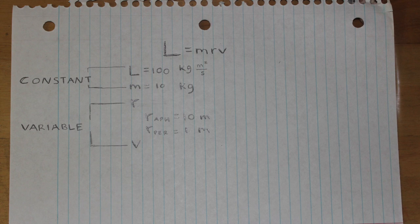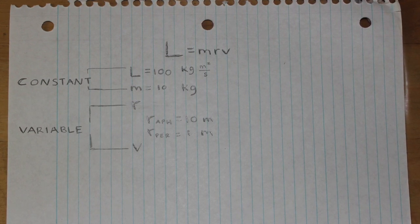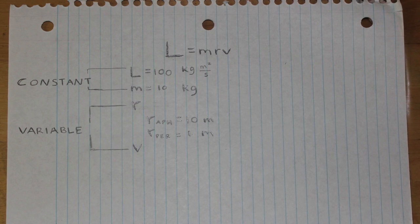And the planet at aphelion can be a distance of 10 meters away from the sun, and at perihelion we can say that distance will be 1 meter. Again, these values are completely inaccurate not to scale whatsoever, but who cares?